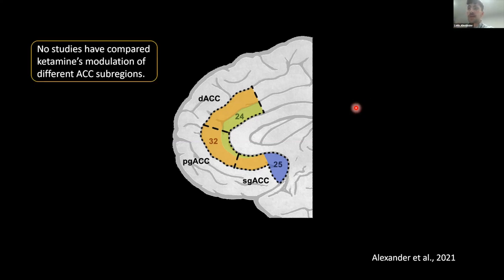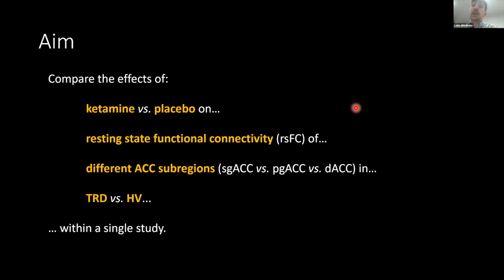Prior to this study, there hadn't been a single study that compared ketamine's modulation of all the different ACC sub-regions in the context of a clinical trial. So what we aimed to do was compare the effects of ketamine compared to placebo on resting state functional connectivity, measured using fMRI, across the different ACC sub-regions — subgenual, perigenual, and dorsal — in people with depression versus healthy volunteers. The comparison with healthy volunteers is particularly important because ketamine may be normalizing activity in some of these regions to levels seen in healthy volunteers.